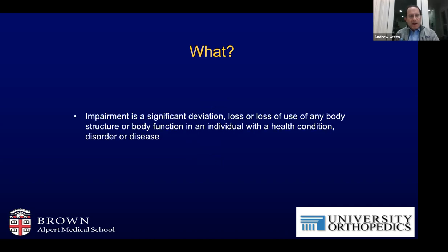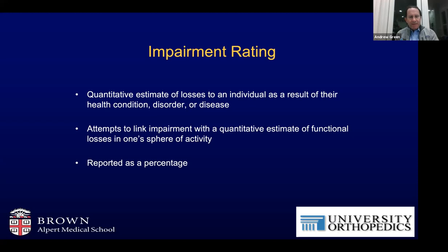Impairment is defined as a significant deviation, loss, or loss of use of any body structure or body function in an individual with a health condition, disorder, or disease. This includes all organ systems in addition to the musculoskeletal system. Impairment rating is an evaluation performed to determine a quantitative estimate of the losses to an individual as a result of their health condition, and it attempts to link impairment with a quantitative estimate of functional losses. Impairment is reported as a percentage of loss.